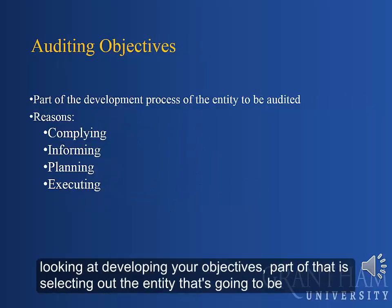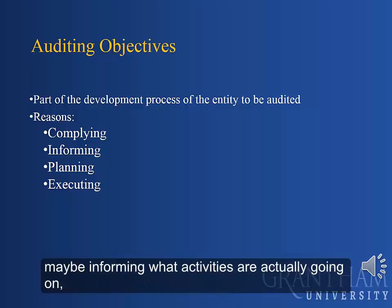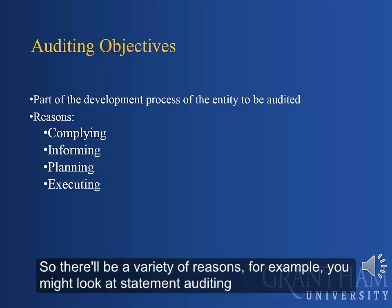When developing your objectives, part of that process is selecting the entity that's going to be audited. In order to do the selection, you're going to look at reasons such as compliance, informing what activities are actually going on, planning — looking at peak times — and performance and execution. There'll be a variety of reasons.